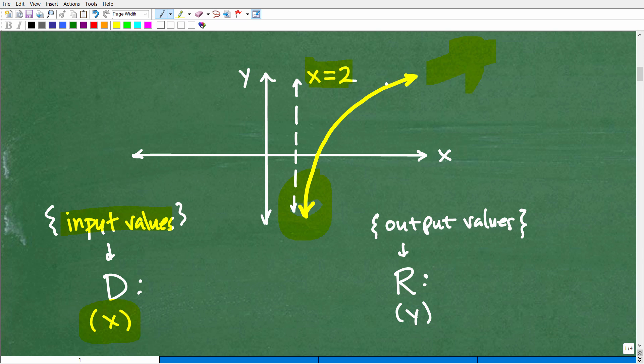So this function here is kind of like approaching this vertical line, X equals 2. So that's something we're going to have to consider. But then in this direction, it just seems like it's going to go off into infinity. So that's basically the general behavior here.